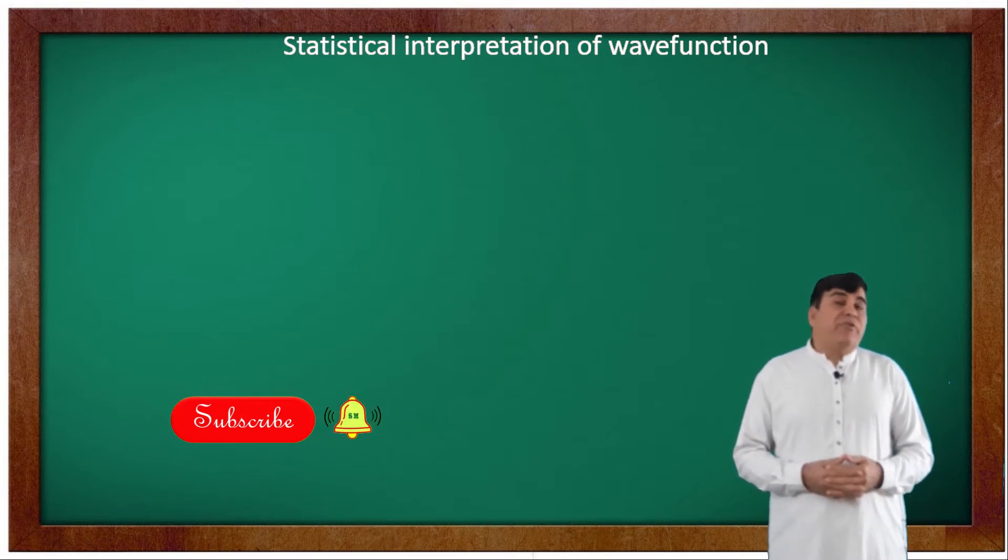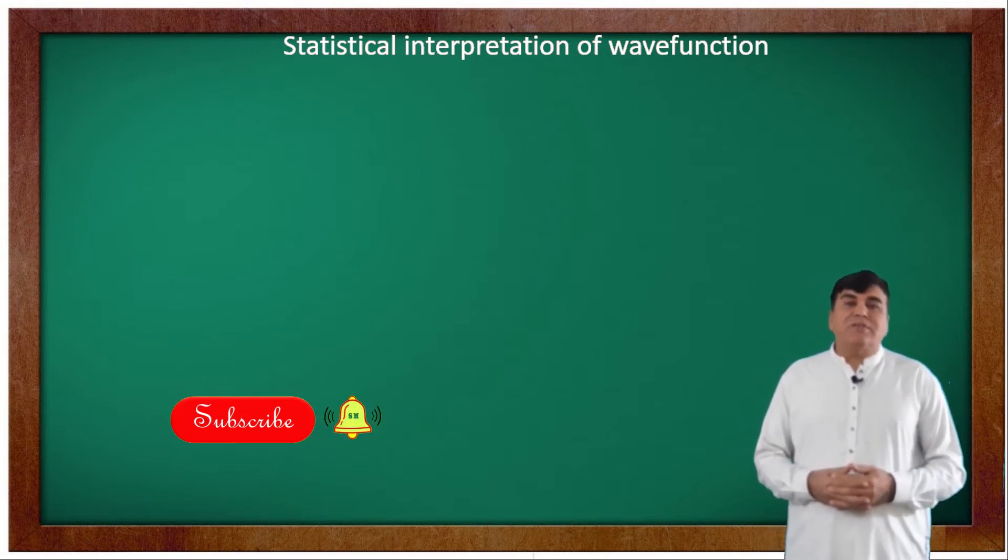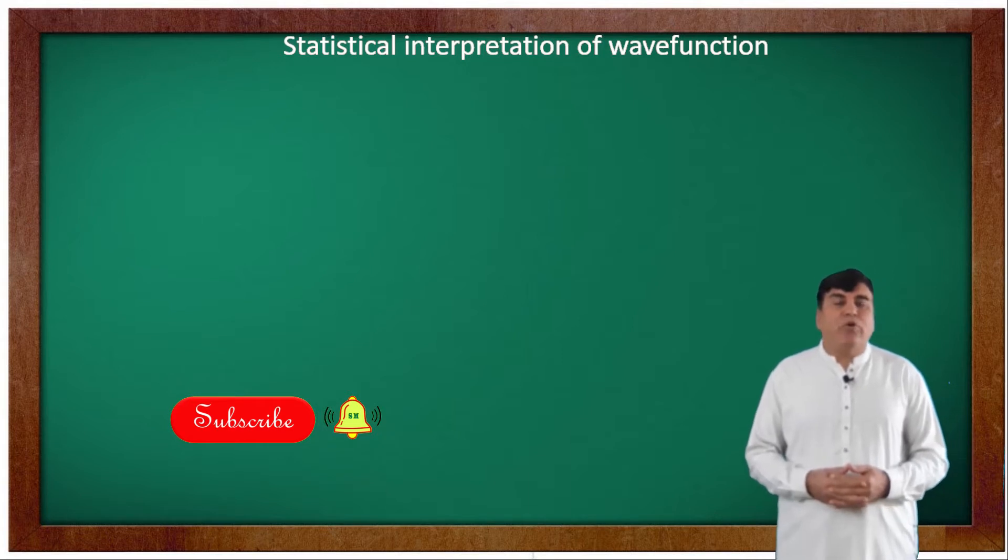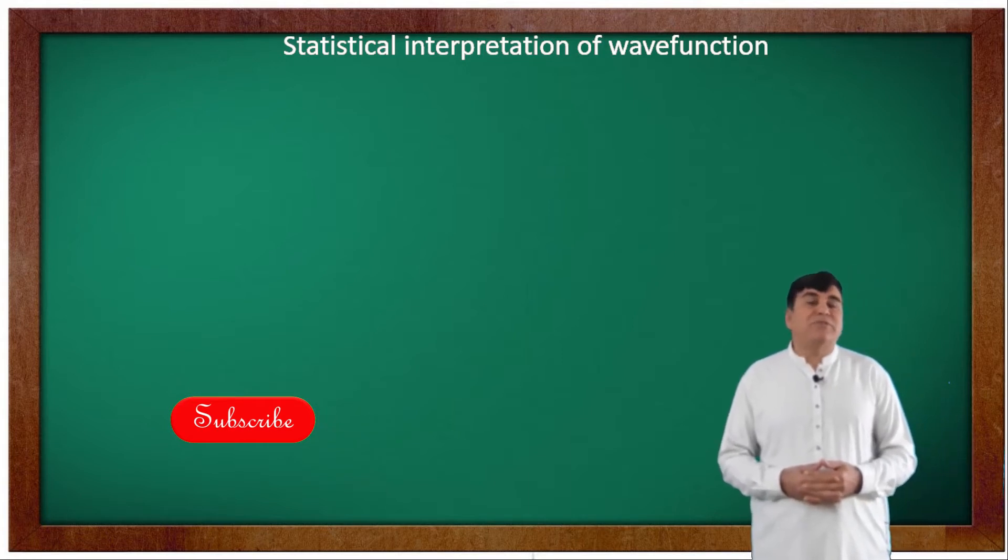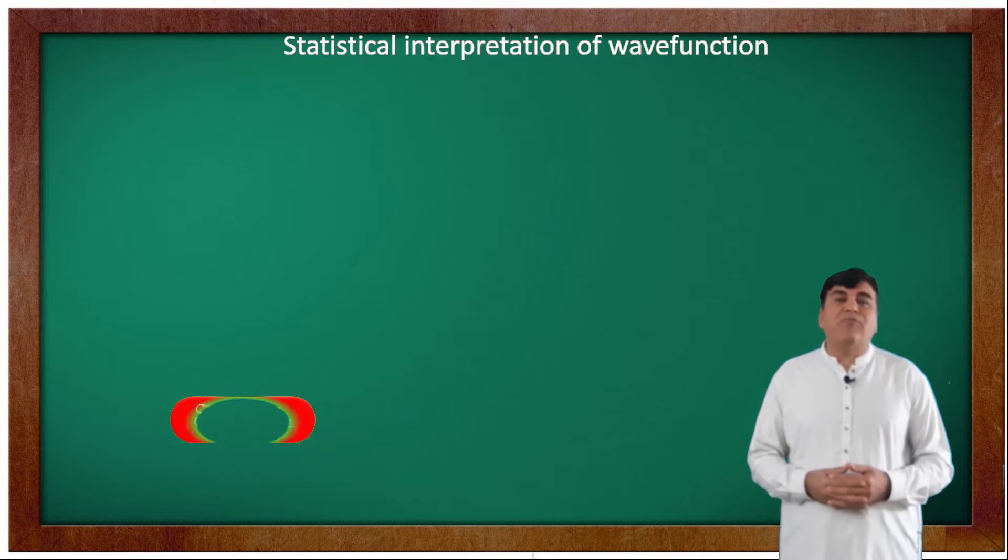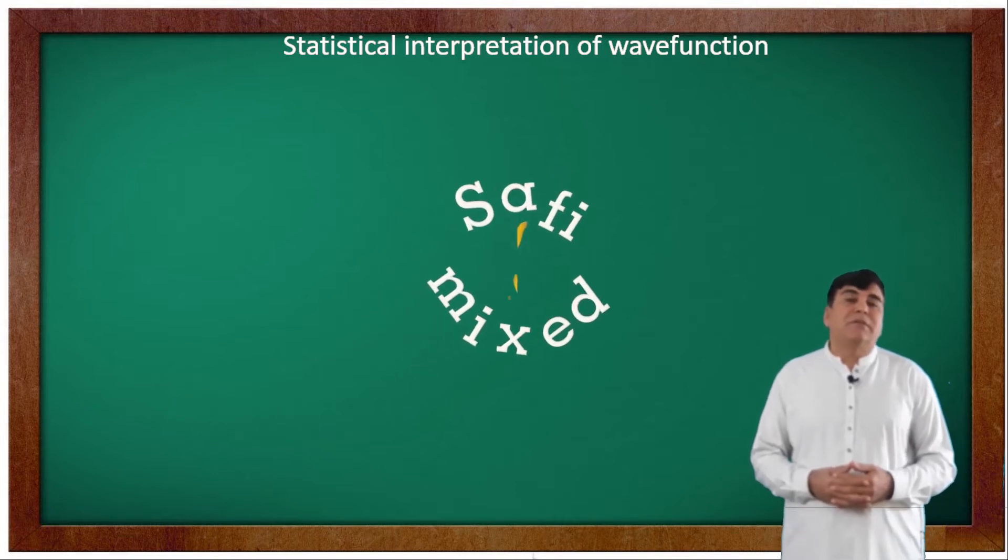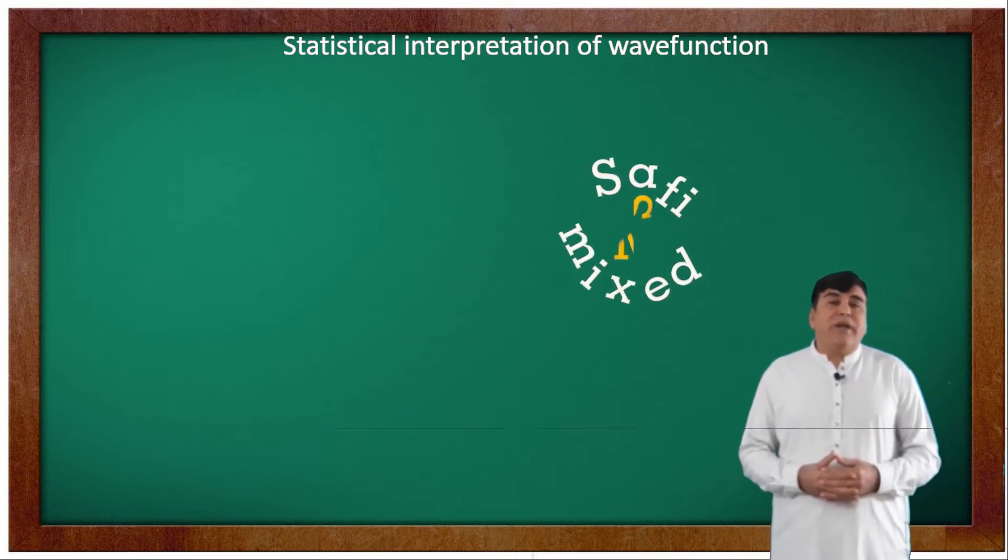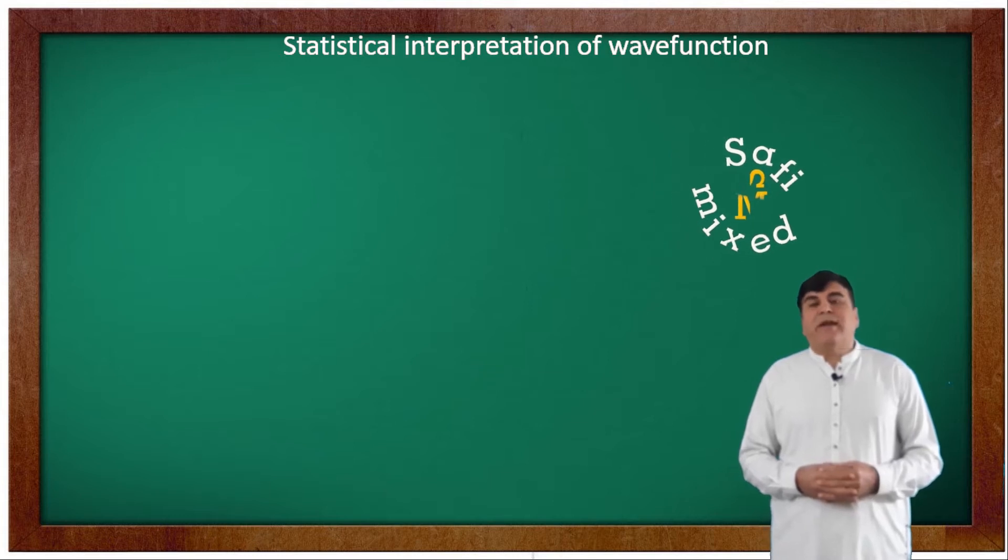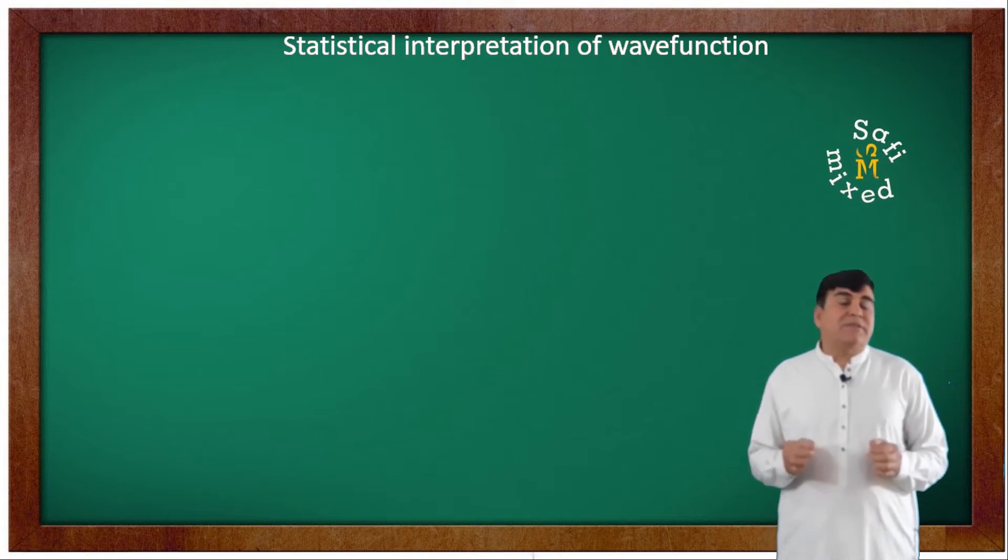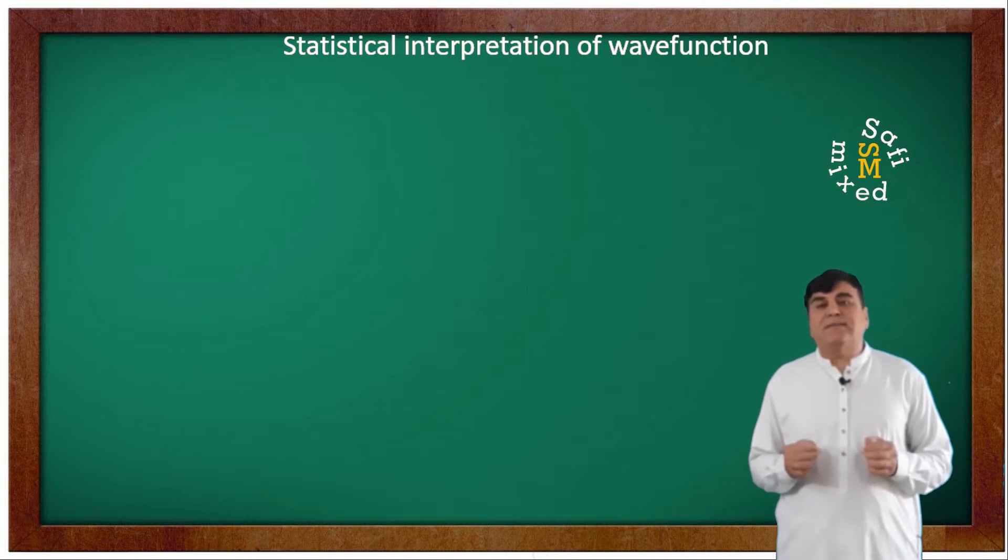As we know, the wave function of Schrödinger wave equation in the form of a wave packet contains the information of the position of quantum mechanical particle. But the Schrödinger equation does not directly provide any guidance for extracting this information of the position of a particle.